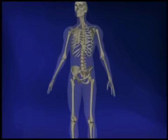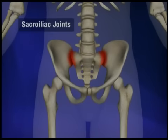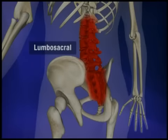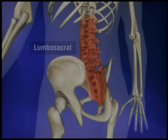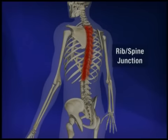Ankylosing spondylitis presents in a number of different areas. Almost universally are the sacral iliac joints, which are affected basically 100% of the time — that's part of the diagnosis of the disease. The lumbosacral region is diagnosed about 50% of the time in patients. The rib-spine junction, that's the area where the ribs meet the spine in the back, that's about 70% of the time.